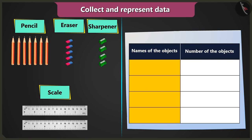Now write which objects are there in the column names of the objects. In the column names of the objects, I wrote pencil, eraser, sharpener, and scale.